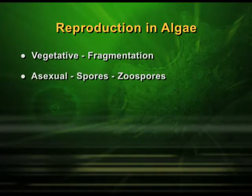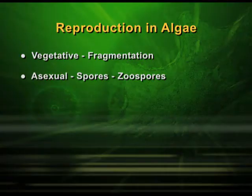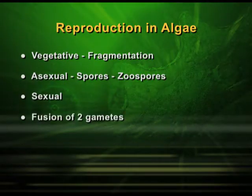That is called vegetative reproduction. Algae can also undergo asexual reproduction by way of producing spores, and these spores in this case are also known as zoospores. Some algae can undergo sexual reproduction, and if it is sexual reproduction then definitely gametes should be produced, and there should be fusion of two gametes to produce an organism of the same kind.